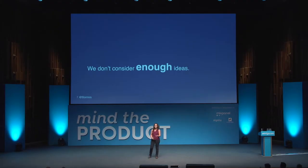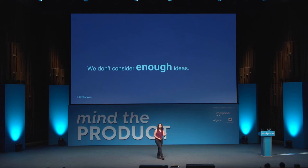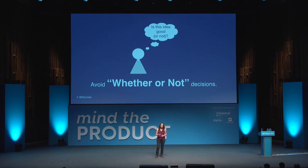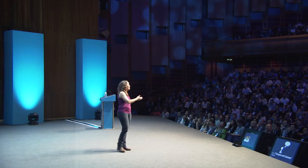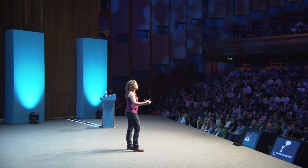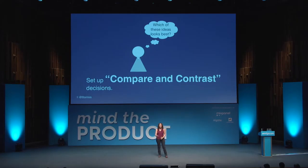Here's an even more important distinction. When we consider one idea at a time, we tend to ask whether-or-not questions. Instead, what we want to do is ask a compare-and-contrast question. When we ask a whether-or-not question, we're asking: is this idea good or not? This is a really hard question to answer — it's treating 'good' as an absolute trait. Instead, what we want to do is ask: of these ideas, which looks most promising? This treats good as the relative trait that it is. It's much easier to answer.